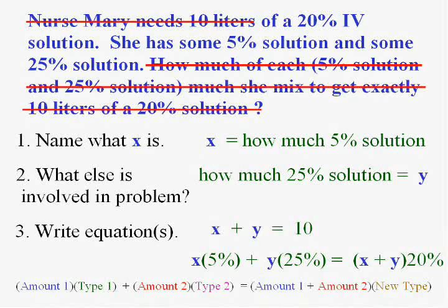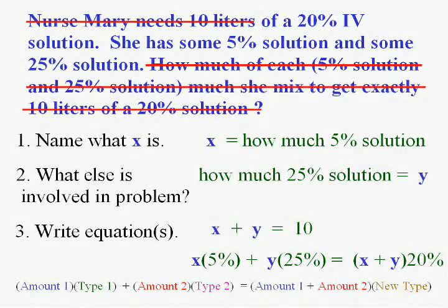This means, in this case, amount 1, which is X, good thing I wrote that down, times its type, 5%, plus amount 2, which is Y, times its type, which is 25%, equals amount plus amount, X plus Y, times the new type that we're trying to form, 20%. And there's your other equation.